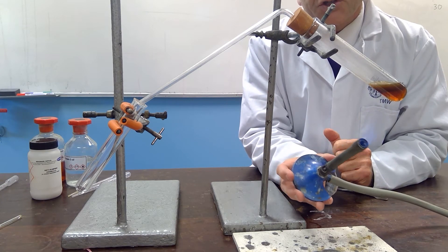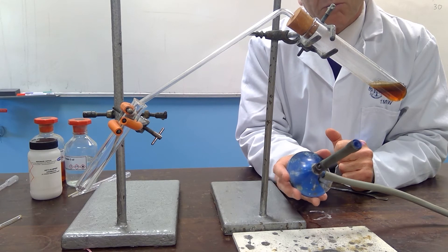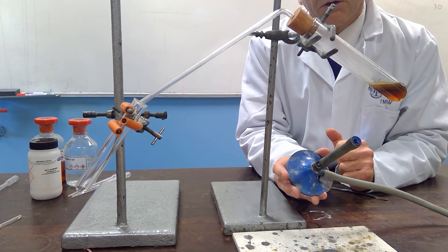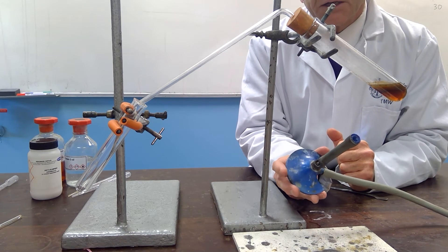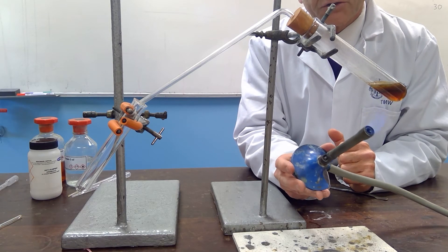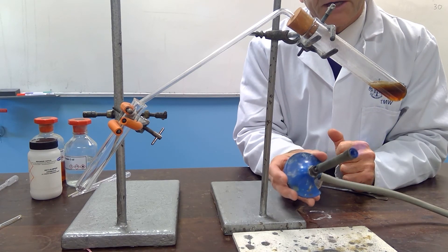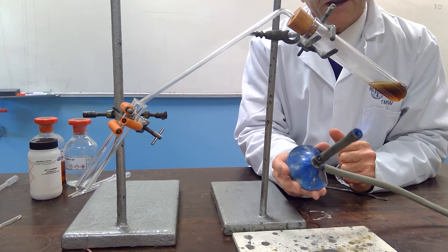So, this distillation is only done for the butan-1-ol and the butan-2-ol. The 2-methyl-propan-2-ol that we tested in the last video didn't give a reaction with acidified dichromate, and so there is no reason to bring across any product from that reaction, or that no reaction.